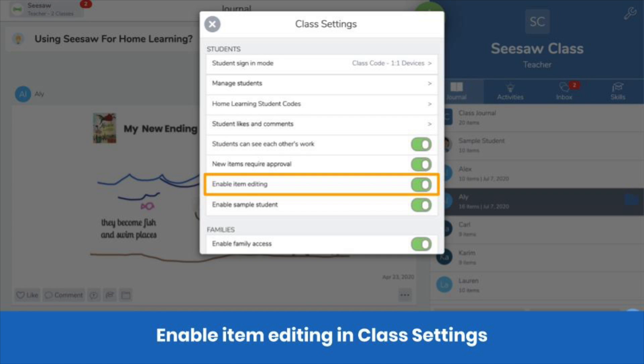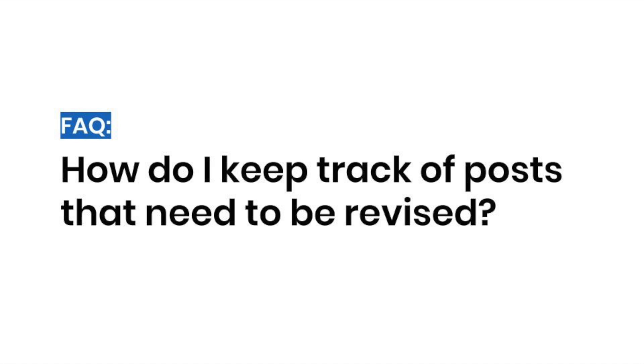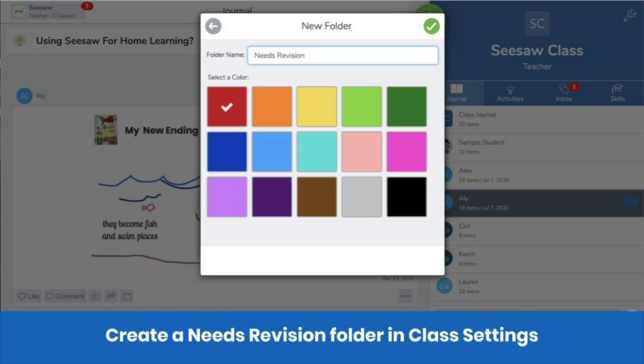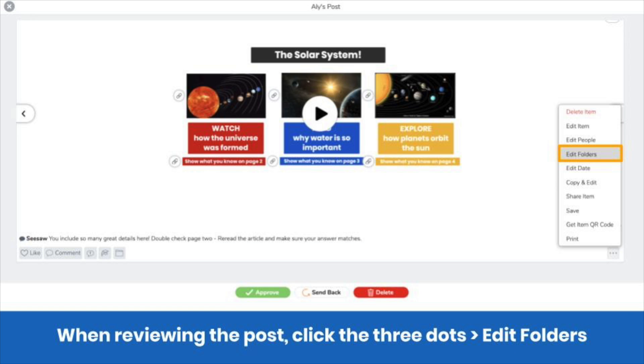For this to work, make sure that you have item editing enabled in class settings. You may be wondering: how do I keep track of all the posts that need revision? Create a needs revision folder. If you need a refresher on folders, check out our folders mini-training.